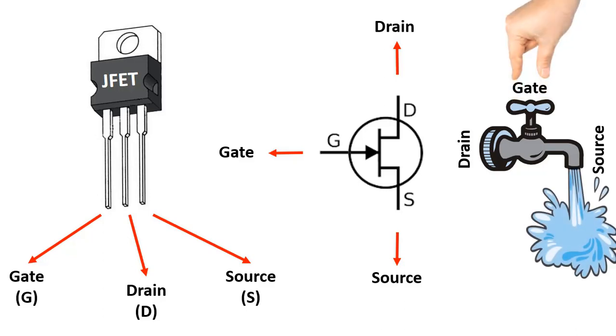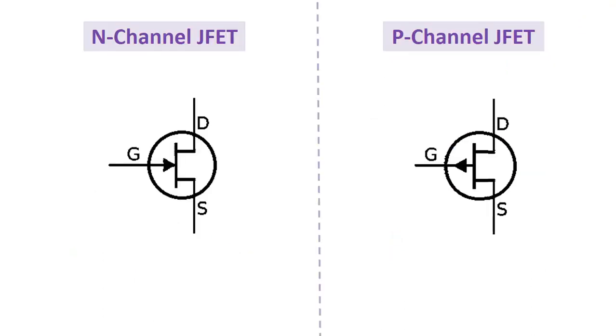In the symbol, if the direction of the arrow on the gate pin shows inside, it is N channel, and if it shows outside, it is P channel. So, what is the difference between them?